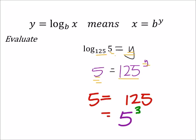So this equals 5. This was originally 125 to the power of y, so it's really 5 to the power of 3 to the power of y. Of course we can get rid of those parentheses and just make that 5 to the power of 3y.